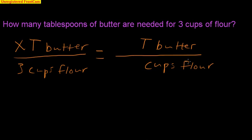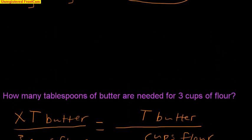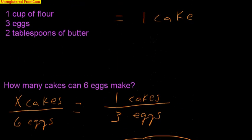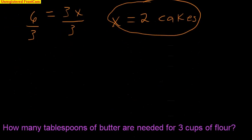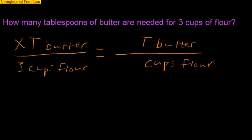Let's scroll back up to see the recipe and how butter relates to flour. We know that 2 tablespoons of butter mixed with 1 cup of flour makes a cake, so the ratio is 2 to 1 — 2 tablespoons of butter to 1 cup of flour.